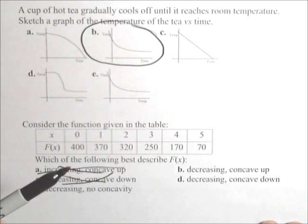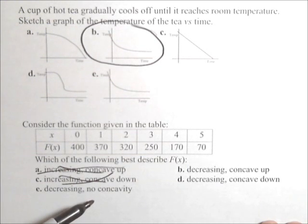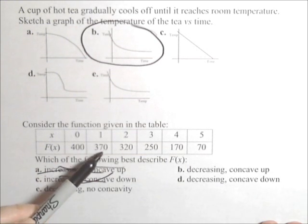If it's concave up, there's an increasing rate of change. If it's concave down, there's a decreasing rate of change. No concavity would imply it's linear. So let's see, it goes down by 30.